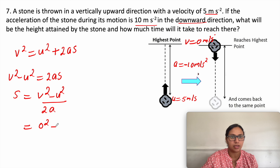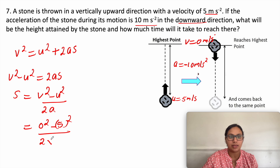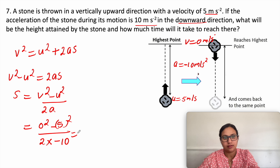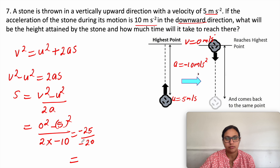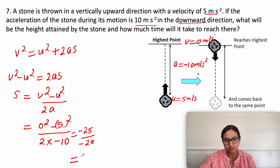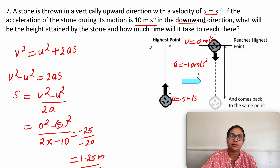Substituting the values: s = (0² - 5²) / (2 × -10) = -25 / -20. The negatives cancel, giving s = 1.25 meters. So the height attained is 1.25 meters.